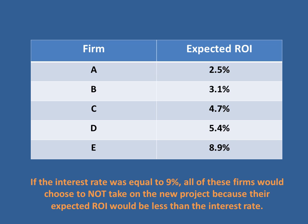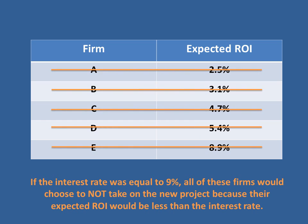Let's say the interest rate is equal to 9%, a very high interest rate. At that interest rate, all of these firms would choose not to take on the new project, because their expected return on investment would be less than the interest rate they'd have to pay on the loan.